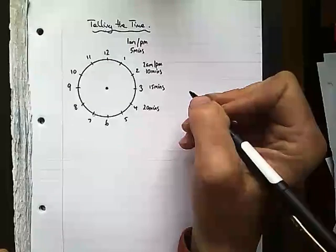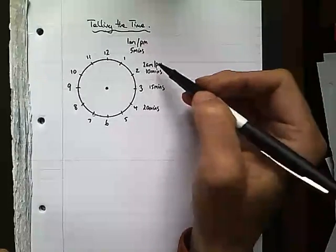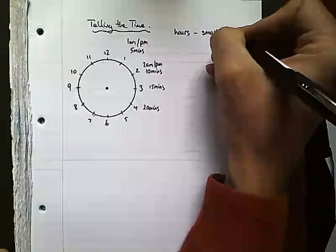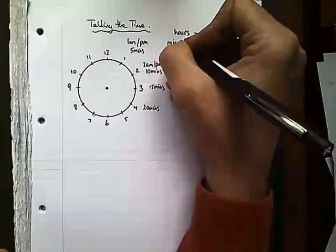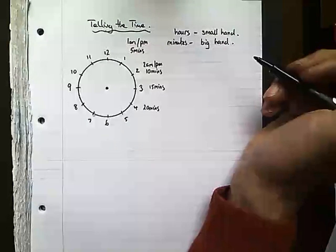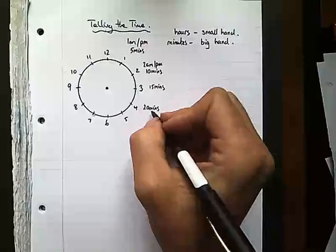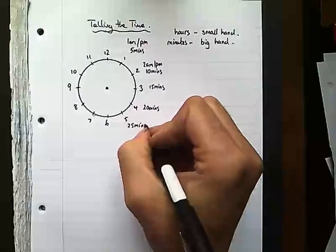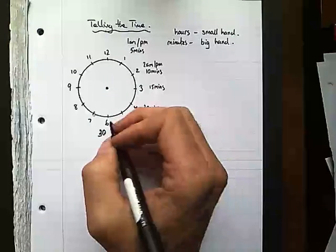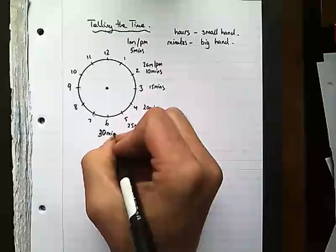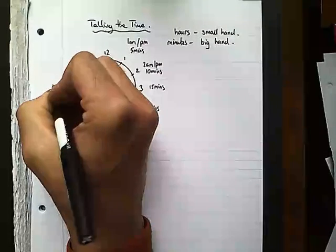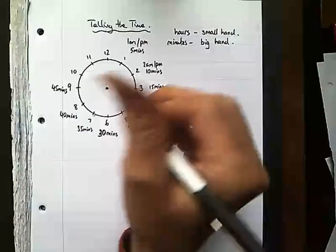The hours are controlled by the small hand on a clock, and the minutes by the big hand. So continuing from twenty minutes at four: twenty-five minutes at five, thirty minutes at six - because every number is equivalent to five minutes. Then thirty-five, forty minutes, and nine is forty-five minutes. We sometimes say quarter to, just like we say quarter past when it's at three.